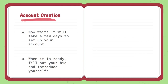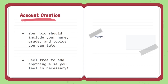After you fill out these forms, it will take a few days to set up your account, so you may just wait. When it is ready, you should fill out your biography. Your biography should include your name, grade, and topics you prefer or can tutor. You can also add things like your interests, hobbies, things you do during your free time, or anything you feel is necessary.